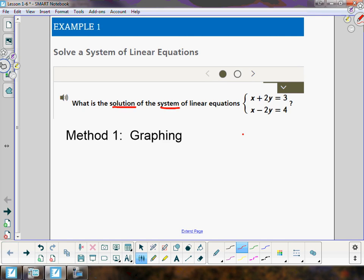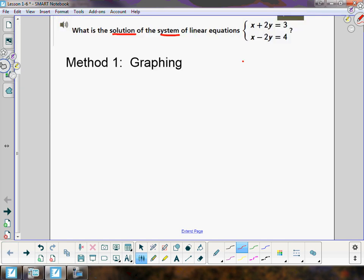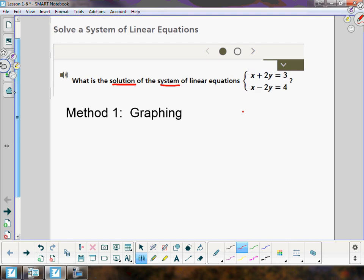That would have been eighth grade. Here we go. For graphing, we're going to take x + 2y = 3 and x - 2y = 4. We're going to try to get y by itself in both of these equations.